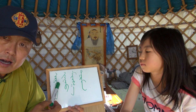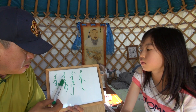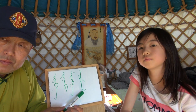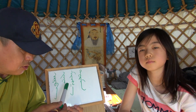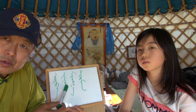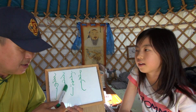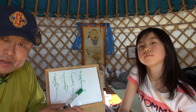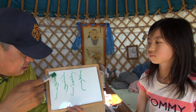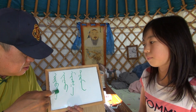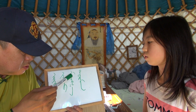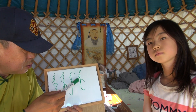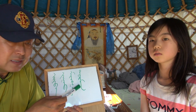Let's read together: Arav, Jo, Miang, Tum. Okay, or: Arav, Jo, Miang, Tum. So: Arav, Ja, Go, Miang, Tum.